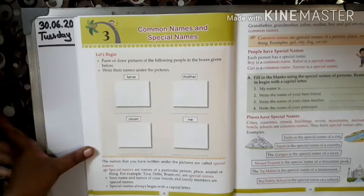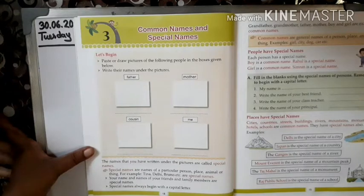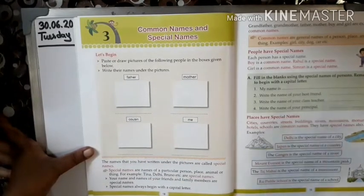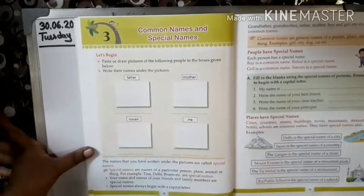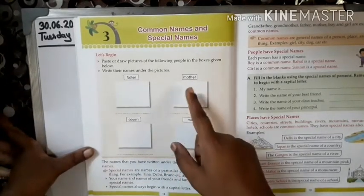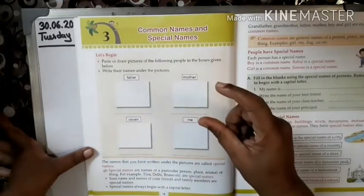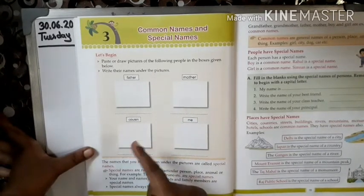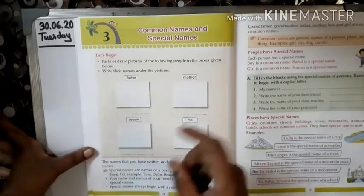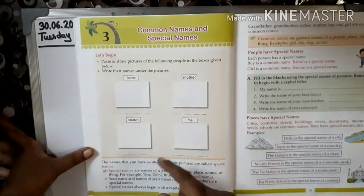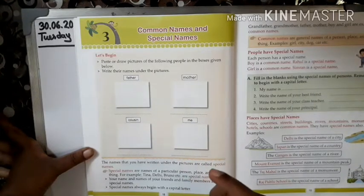Let's begin. Paste or draw pictures of the following people in the boxes given below, and write their names under the picture. You see: father, mother, cousin, me. You will paste a passport size photo of your father, your mother, your cousin — sister or brother — and your own picture.